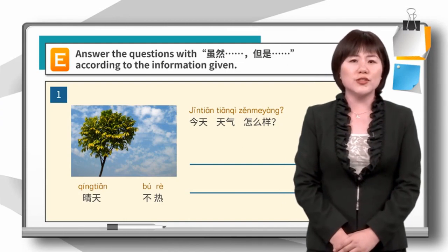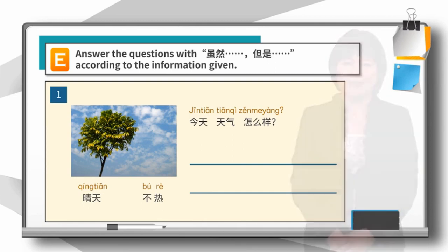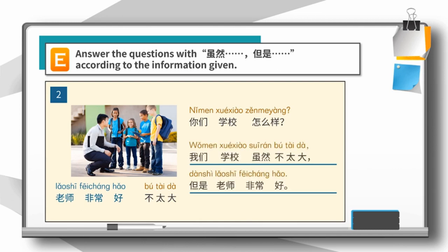Now, answer the questions with 虽然, 但是 according to the information given. 今天天气怎么样? 您们学校怎么样? 今天虽然是晴天, 但是不热. 您们学校怎么样? 您们学校虽然不太大, 但是老师非常好.